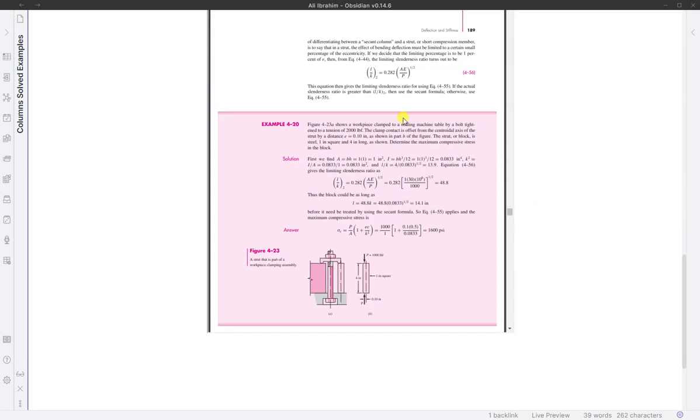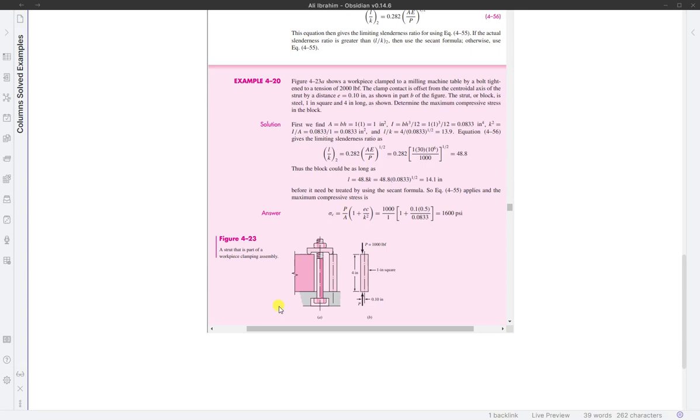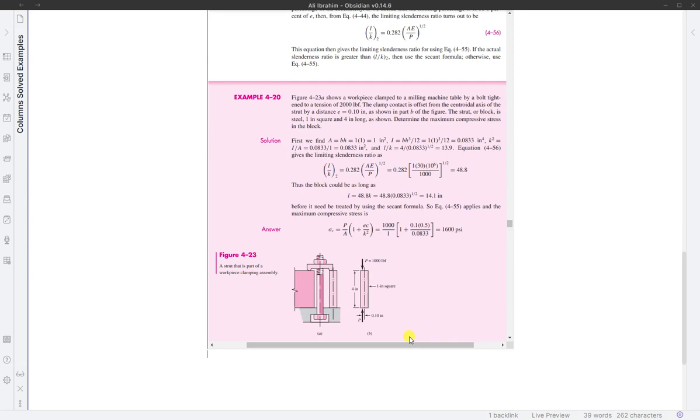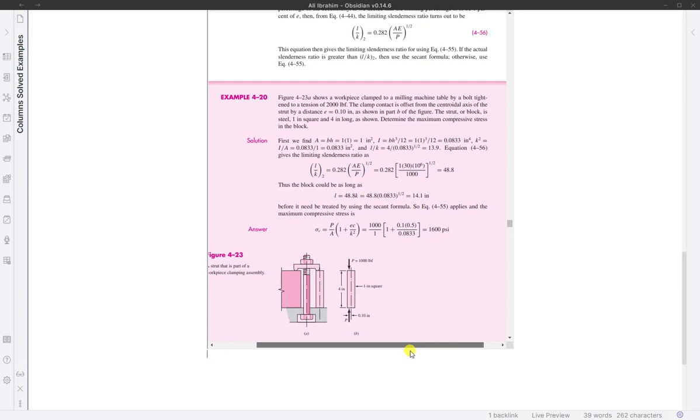For Problem 420, we'll look at Figure 2.23, which shows a workpiece clamped to a milling machine table by a bolt under a tension of 2,000 pound force. The clamp contact is offset from the centroidal axis of the strut by distance e, 0.1 inches.